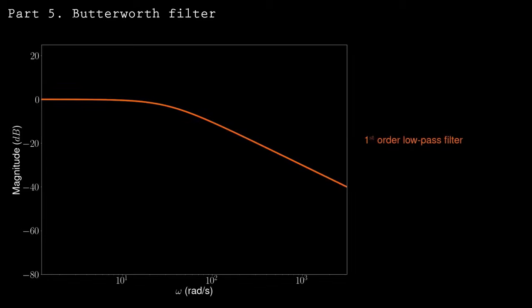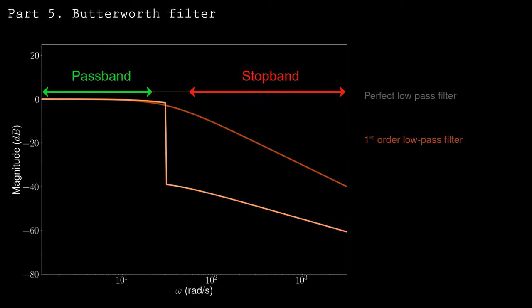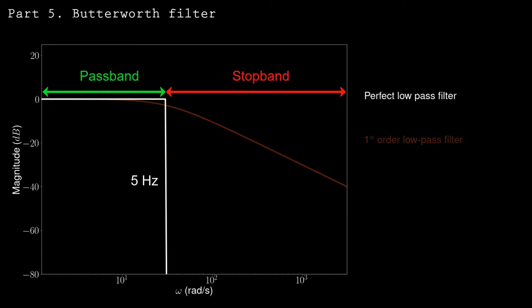We can understand this better by looking at the Bode plot for the first-order low-pass filter. The pass band is the set of frequencies where the filter preserves the signal — for the 5 Hz cutoff filter, that's roughly 0 to 2 Hz. The stop band is where most content is removed — from about 30 Hz on. Between 2 and 30 Hz, the filter doesn't do very well; it attenuates signals but won't actually remove them. This is the transition band. In a perfect world, a low-pass filter would perfectly pass all signals below the cutoff and eliminate everything above — no transition band. We can't achieve that, but we can create a filter with a smaller transition band.